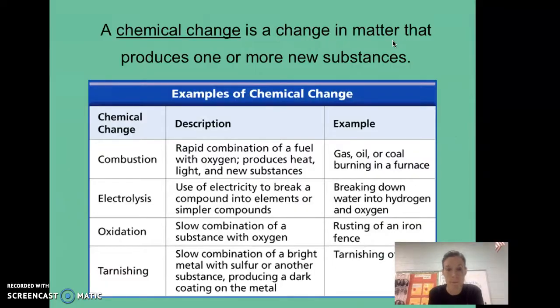Some ways that it can change: a chemical change is a change in matter that produces one or more new substances, so something is changing into something new. Here are four really important kinds of chemical changes that can happen, and you're going to see these on your test. Combustion - you've probably heard of it - it's combining some sort of fuel with oxygen and it produces heat and light.